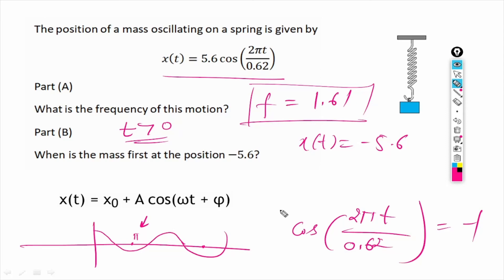Now we have to assume the angle is positive because time is always positive. So now to reach this position at the first time, this angle has to equal π.